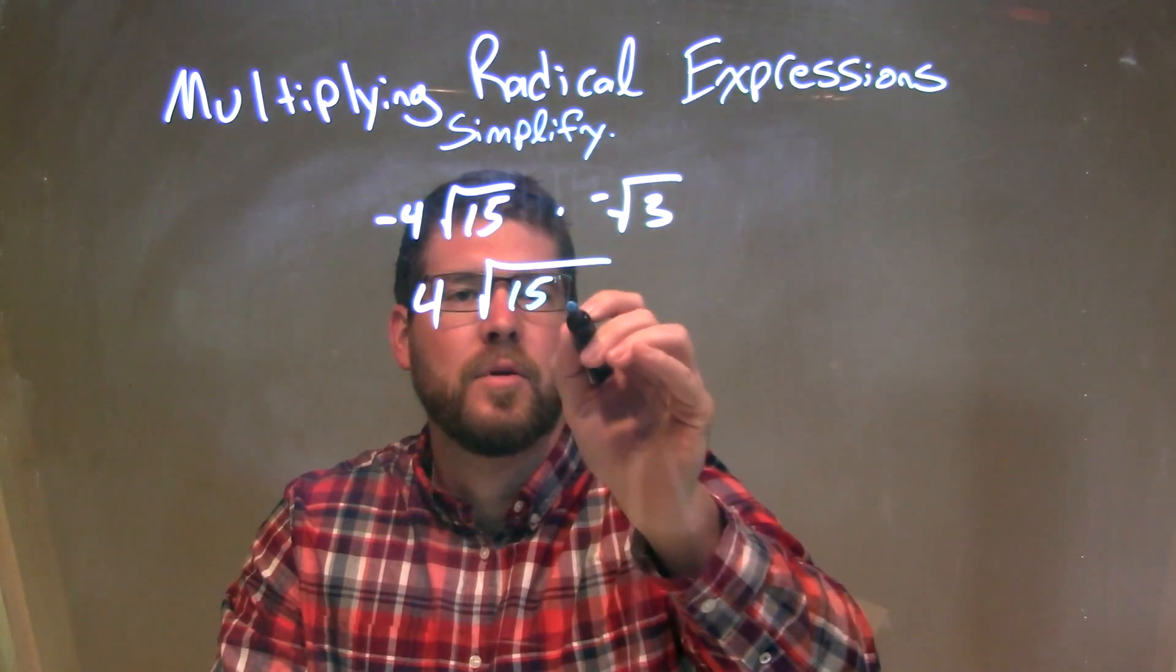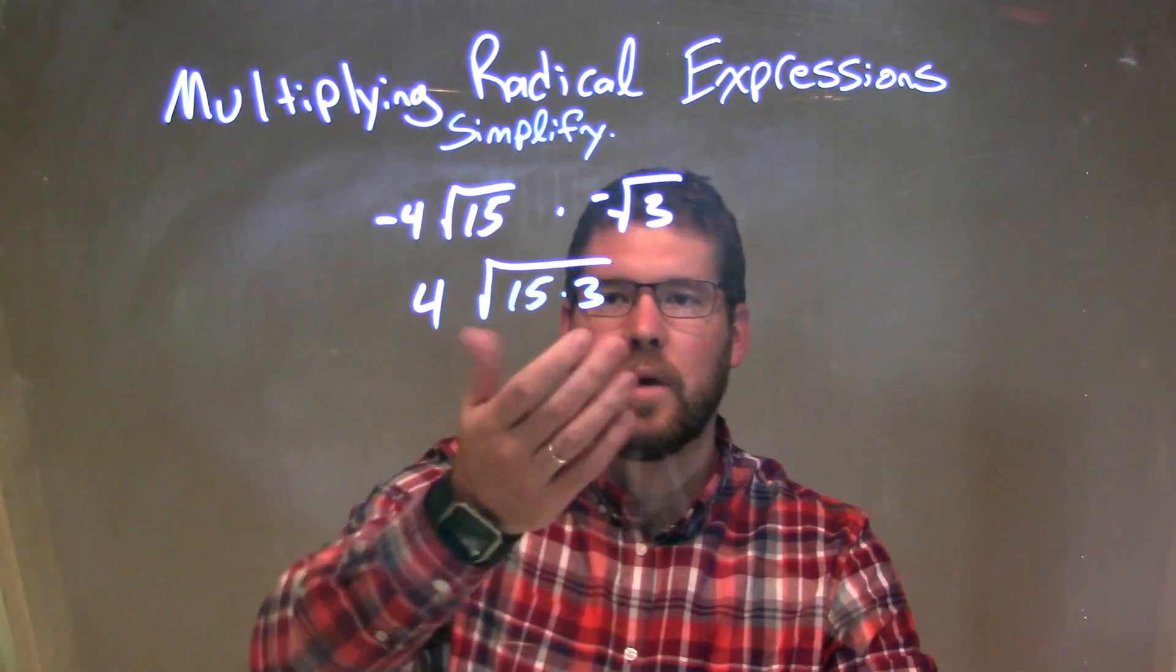Then inside, we have 15, the square root of 15 times the square root of 3, and we can write it like that, multiplying inside the square root.